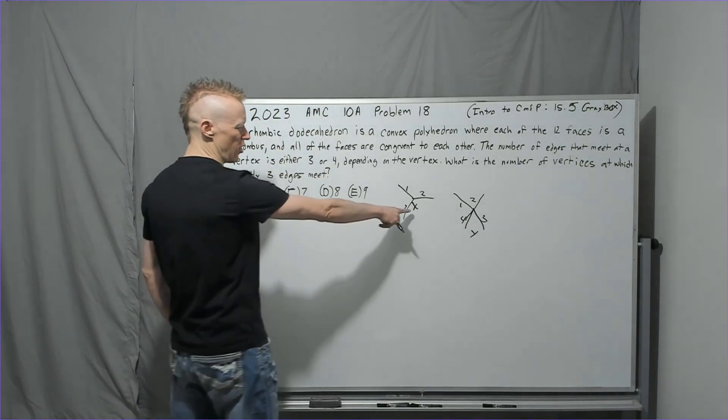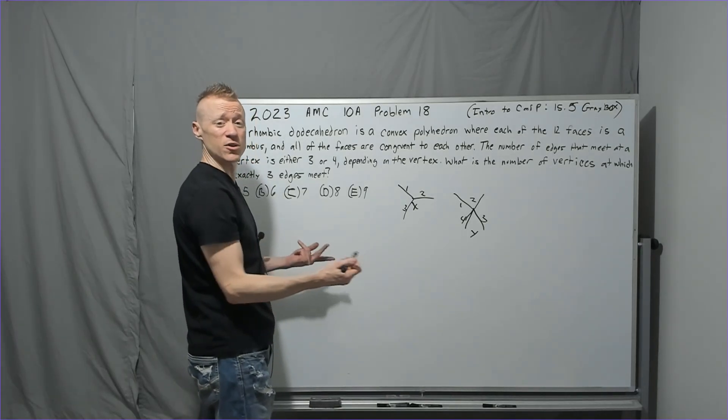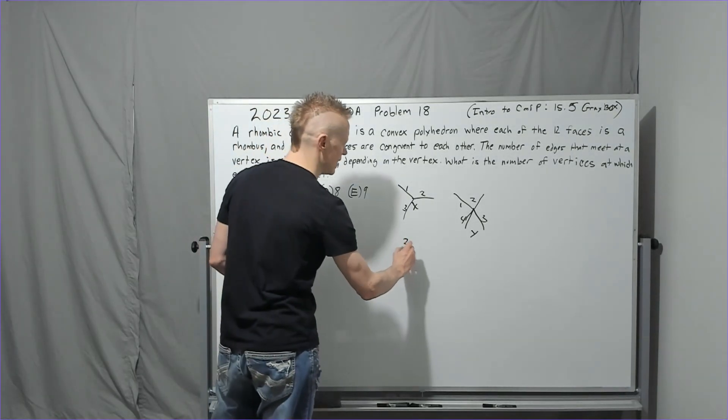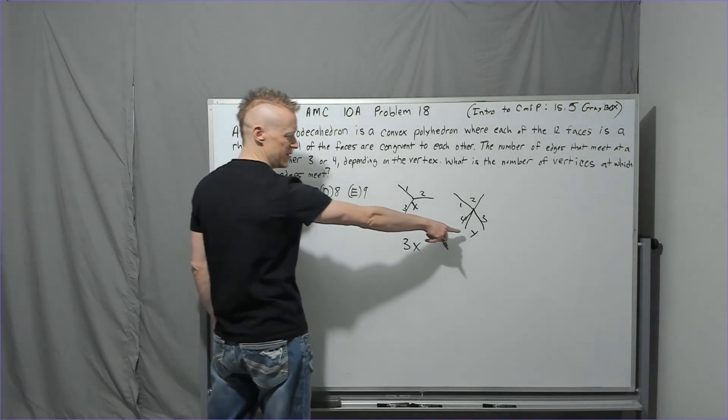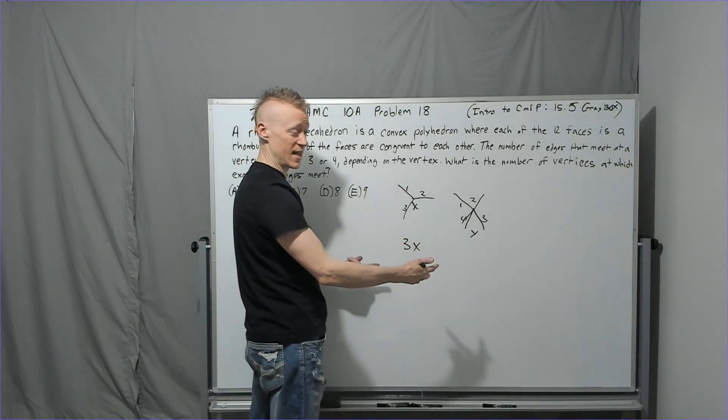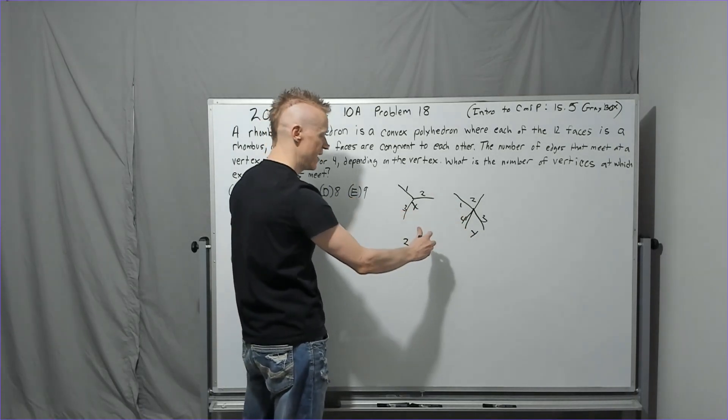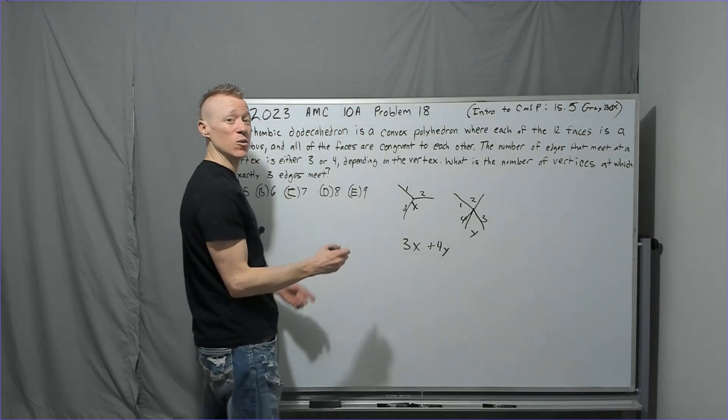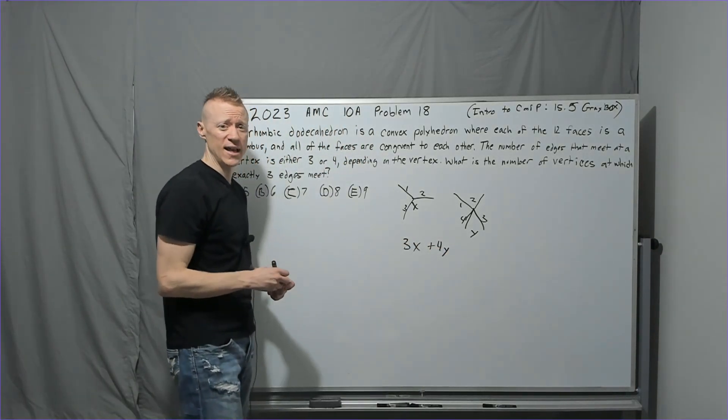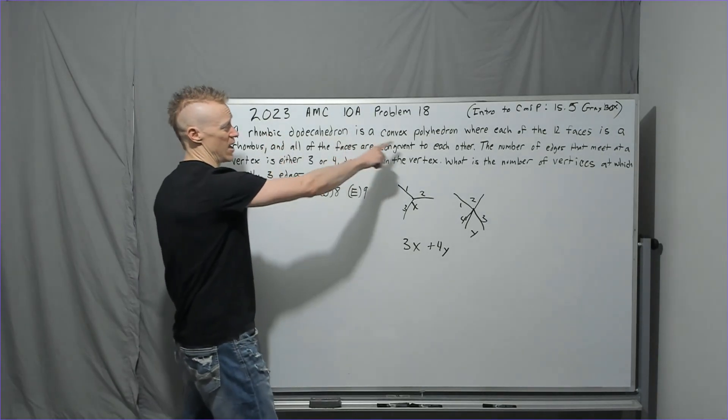So if I take all of the type X and I multiply it by 3, I would have the number of edges that meet at type X. And if I take the number that meet at type Y, I take the amount of type Y there is, meeting places of type Y, and I do plus 4Y, that has to equal the total number of edges that we have. Just logical, right?